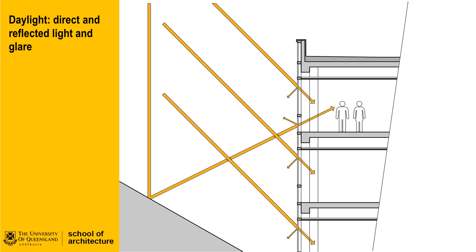When considering the effects of daylight coming into a building, we must also consider the effects of reflected daylight or glare entering the building from outside, as well as the effects of glare and reflected light from our building affecting other buildings and public spaces.